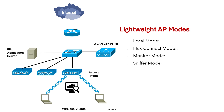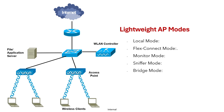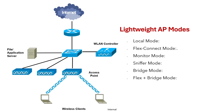The AP can also operate in sniffer mode, where it captures wireless traffic for analysis. Bridge mode enables the AP to act as a bridge between two networks — you can configure two APs in bridge mode to have connectivity between them. Flex-plus-bridge mode is a hybrid of FlexConnect and bridge mode for mesh networks. Finally, SE Connect mode collects and analyzes spectrum data to discover sources of interference.